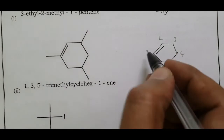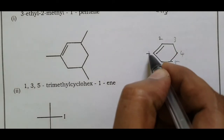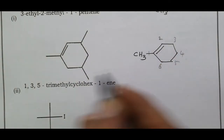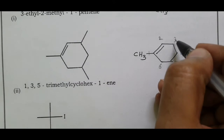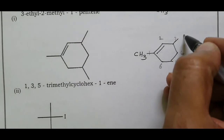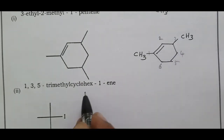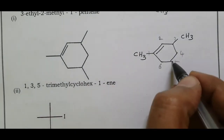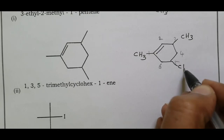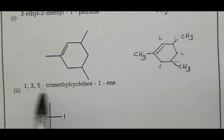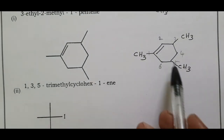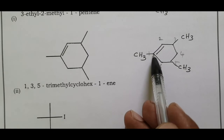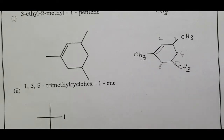Carbon one gets one methyl group — CH3. Carbon three gets one methyl group — CH3. Carbon five gets one methyl group — CH3. This gives us 1,3,5-trimethylcyclohexene.